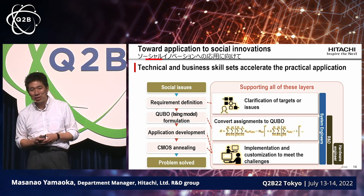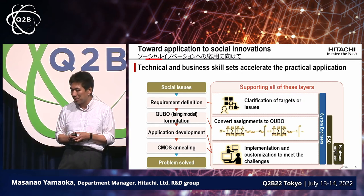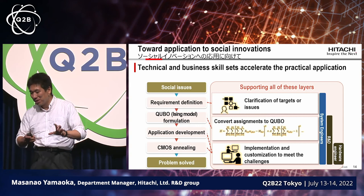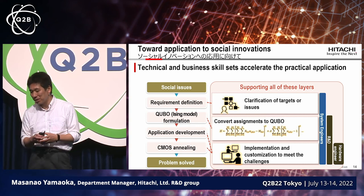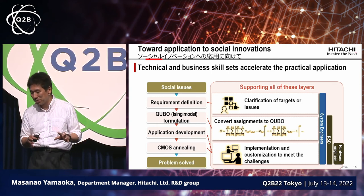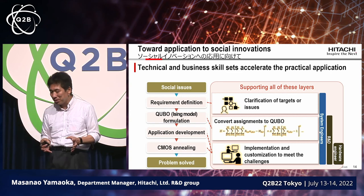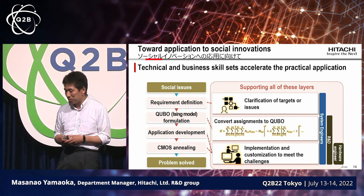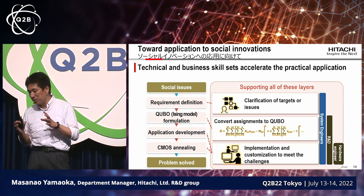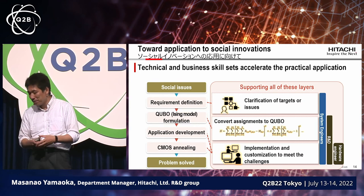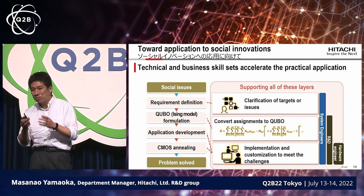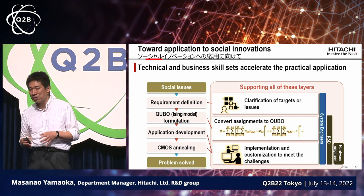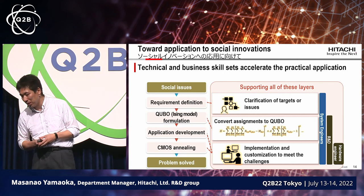We have to really understand the issues that customers are grappling with and create real value for them. Similar to what Izumi-san described, we start with social issues, define requirements based on those, then convert them into a QUBO or Ising model, then build that into an application, and then solve it. We also have to go beyond pure R&D — system engineers embedded with customers need to ask what problems clients are actually struggling with, so we can define requirements and come up with commercially viable use cases.